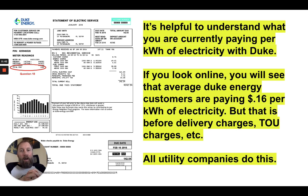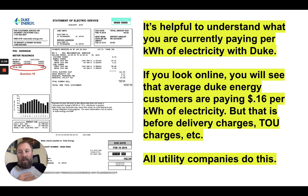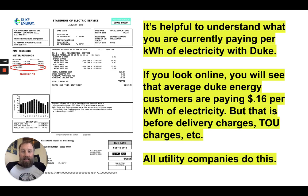It's helpful to understand what you are currently paying per kilowatt hour of electricity with Duke. Most people do not know this — they just look at their bill and pay whatever it is. If you look online, you'll see that the average Duke Energy customer is paying about 16 cents per kilowatt hour, but that is before things like delivery charges, time-of-use charges, etc. And all utility companies do this, not just Duke.